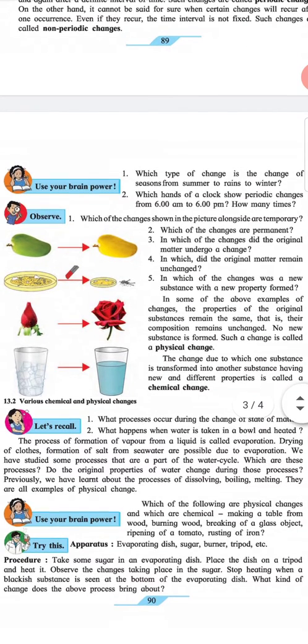Use your brain power: What type of change is the change of seasons from summer to rains to winter? Which hands of clock show periodic changes from 6 a.m. to 6 p.m.? How many times?